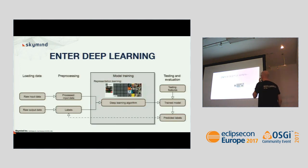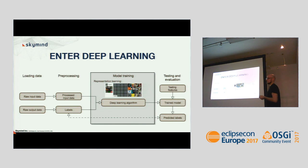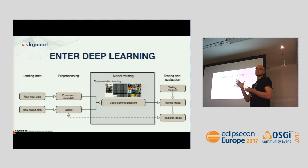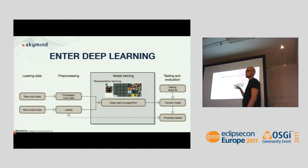In deep learning, a lot of this feature preparation and feature engineering moves into the model itself. For this example, you can plug in just the raw image data — just the pixels — put them into the model, feed it the labels, and the computer figures out an internal representation that allows it to classify those images accordingly. So instead of complicated pre-processing, that's taken care of by the model itself.